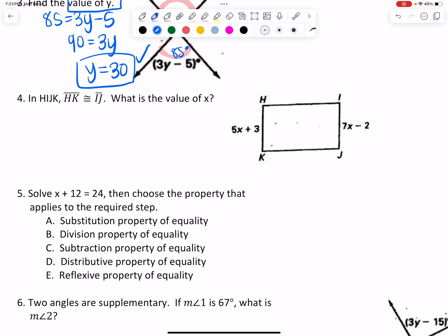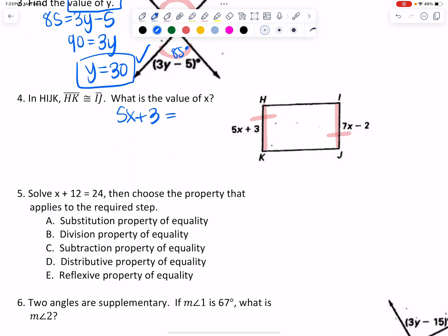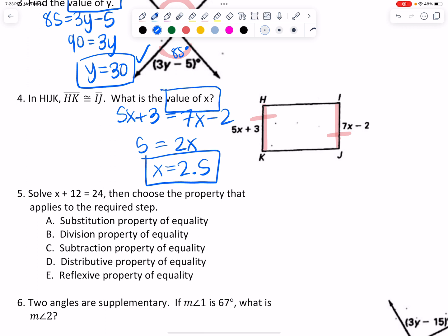In this four-sided shape HIJK, it tells me that HK is congruent to IJ. So we know that those expressions can be set equal mathematically. I can take 5x plus 3 and set it equal to 7x minus 2, because the length of HK is going to be equal to the length of IJ since those segments are congruent. Going through the algebra quickly, that gives me 2.5 for my value of x. You could always go through and plug it in and make sure — 5 times 2.5 plus 3 is going to be the same as 7 times 2.5 minus 2.